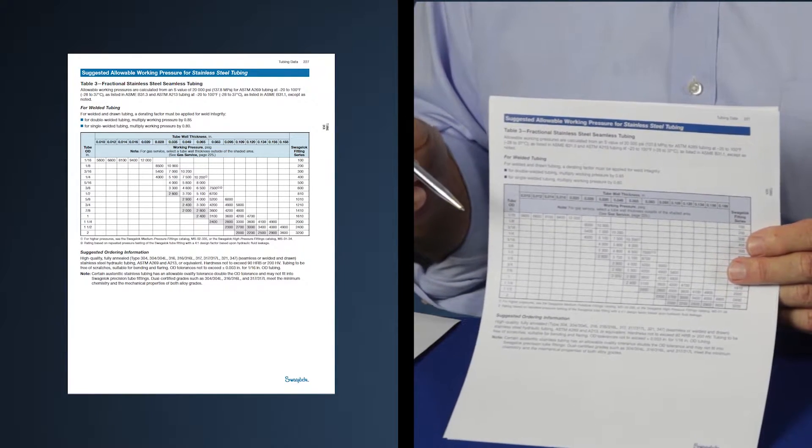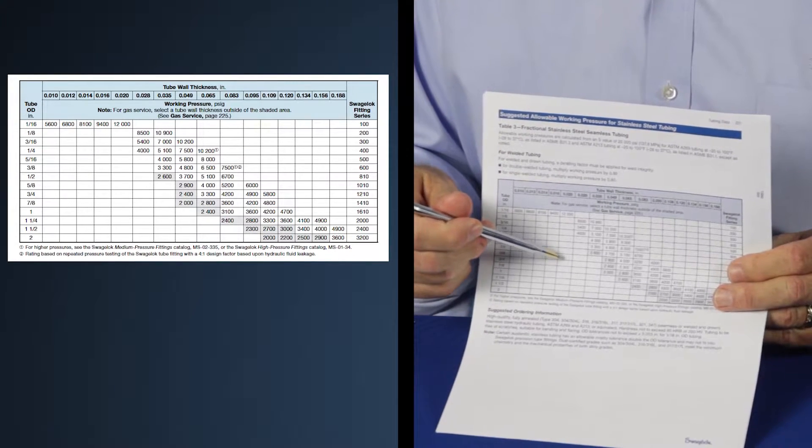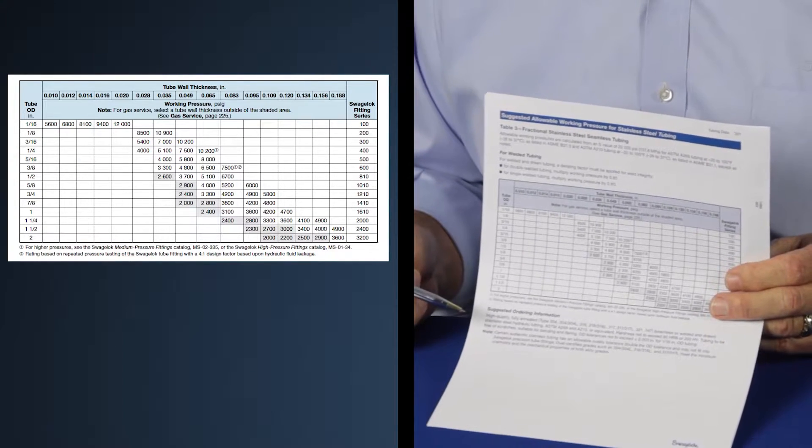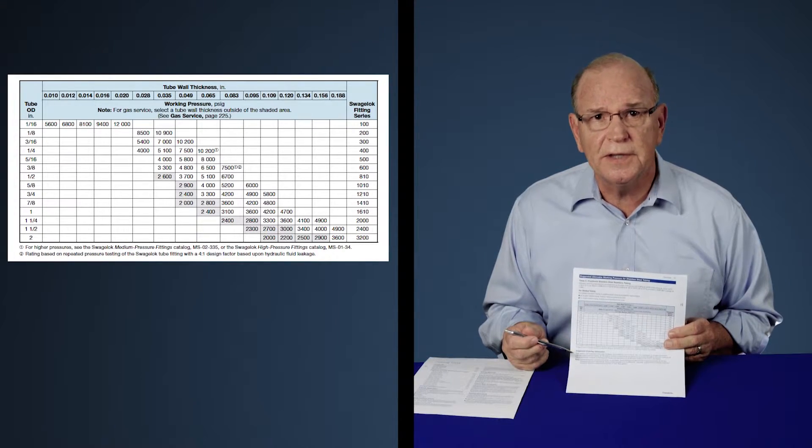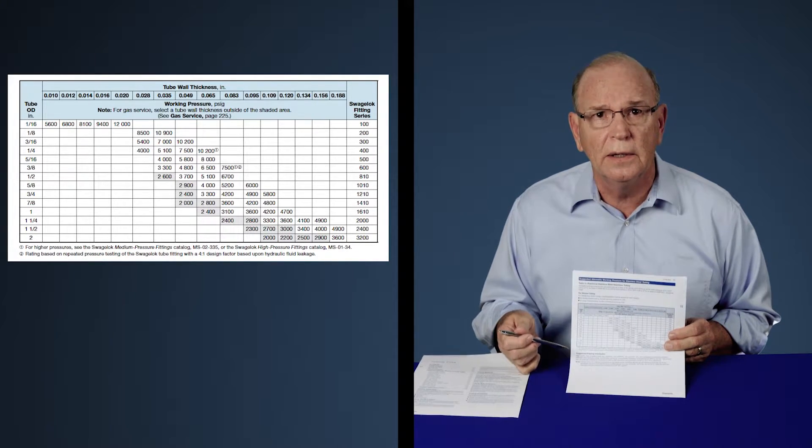Let's use half-inch tubing as an example. Half-inch tubing, as you go across, you'll see that there are no working pressures listed for several of the wall thicknesses. What this is telling you is that those wall thicknesses are too thin for half-inch tubing.